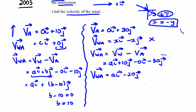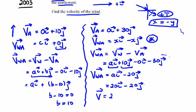Because of the 45 degree angle, the x and y components are going to be the same magnitude, so we can say this is 20 in the i direction and minus 20 in the j direction. So a equals 20. The velocity of the wind is 20 in the i direction and b equals 10 in the j direction.